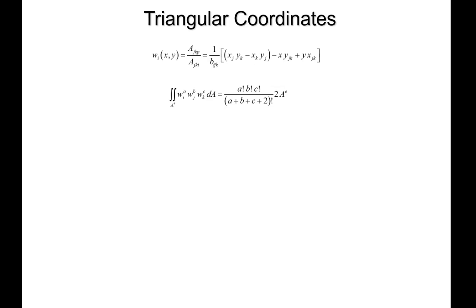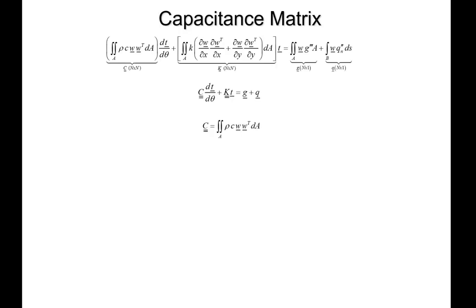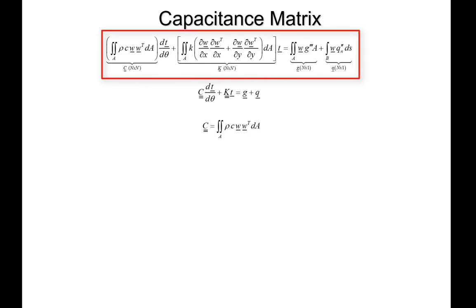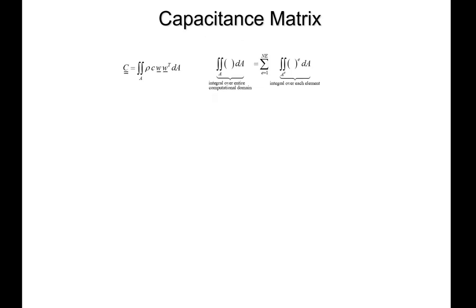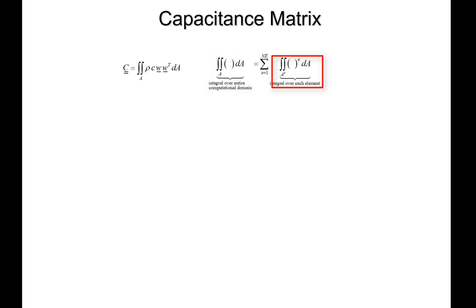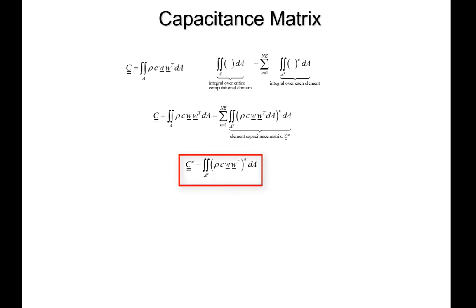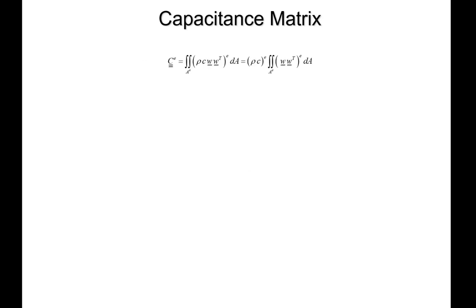With those tools in hand, we're ready to assemble the element capacitance matrix and the element conductance matrix. The global capacitance matrix C comes from an area integral over the entire computational domain, assembled one element at a time. The area integral over one element is the element's capacitance matrix. Here's its basic form.